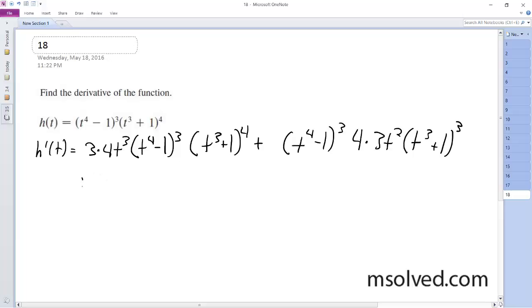And so simplifying this down, so I get 12t raised to the third, t to the fourth minus one raised to the third, t to the third plus one raised to the fourth, plus t to the fourth.